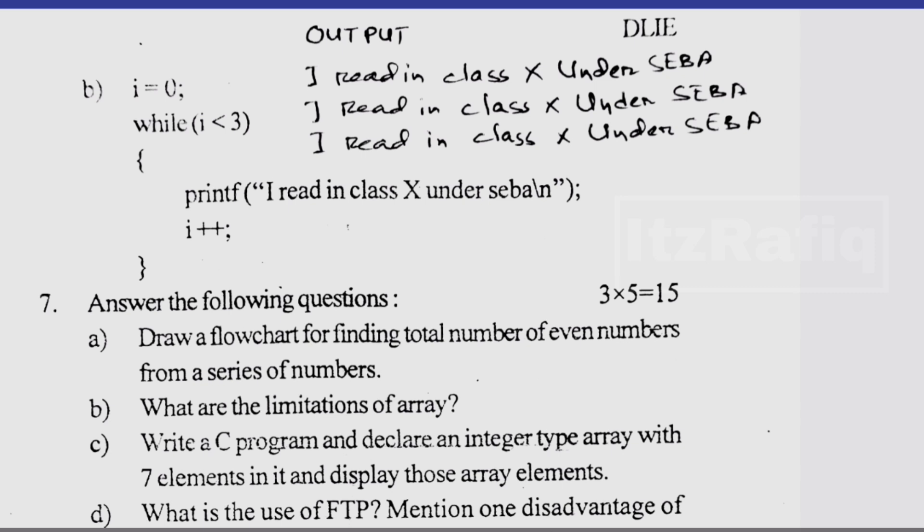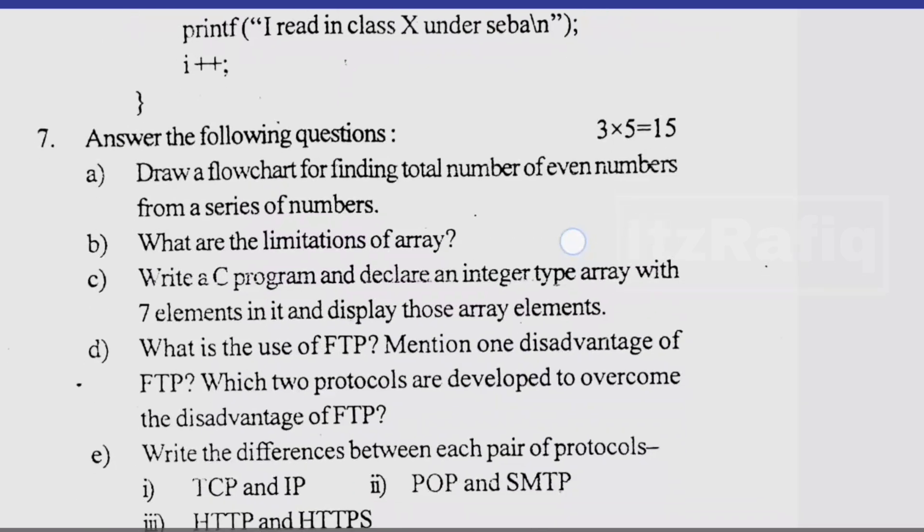Then next question, this one, here you can see i starting from 0 and it goes till less than 3, that means 0, 1, 2. So the line 'I read in Class 10 under C' by it will repeat three times, so this will be the output.